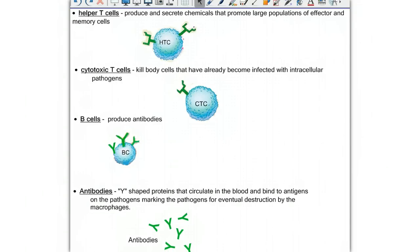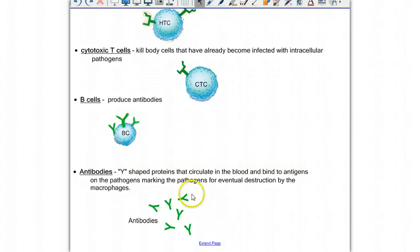These antibodies are Y-shaped proteins that circulate in the blood and bind to antigens on the pathogens, marking the pathogens for eventual destruction by macrophages.